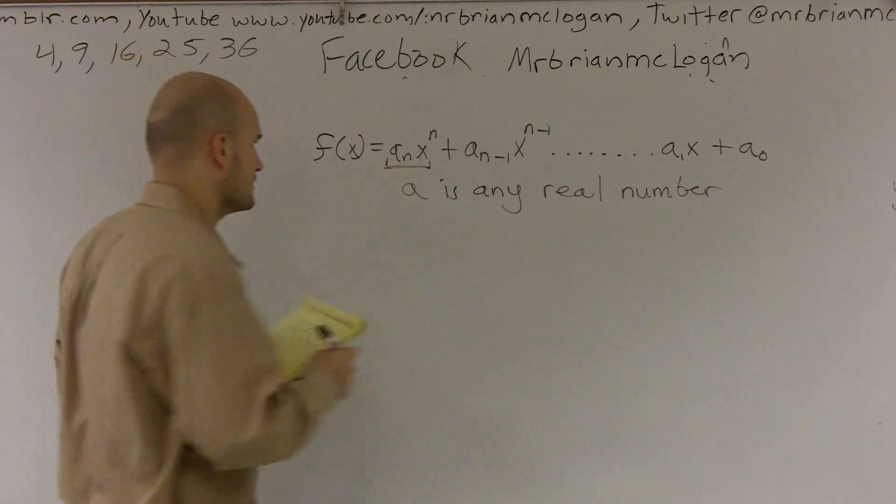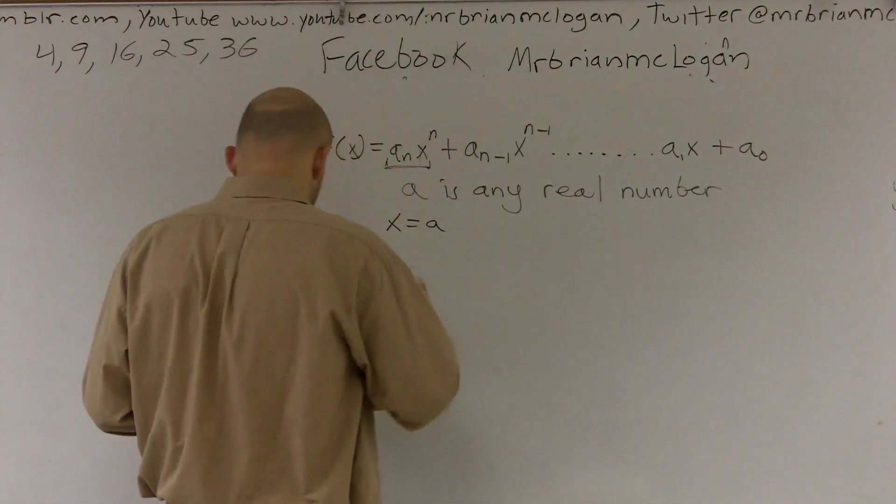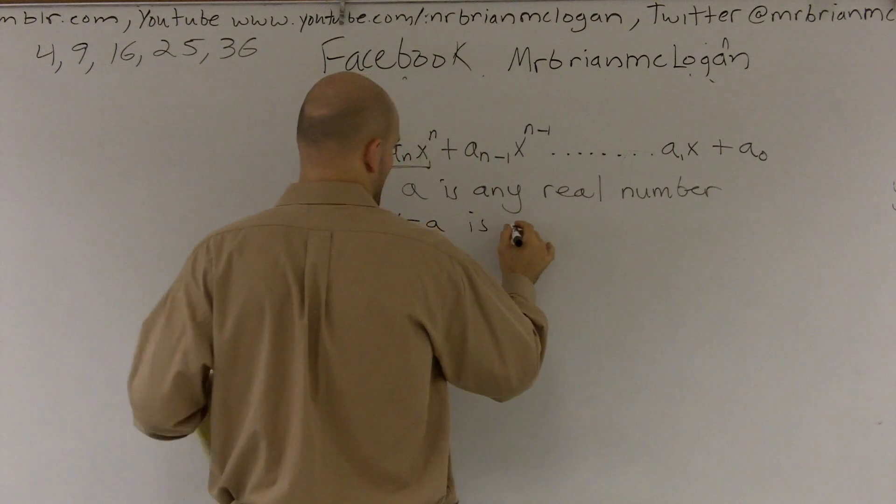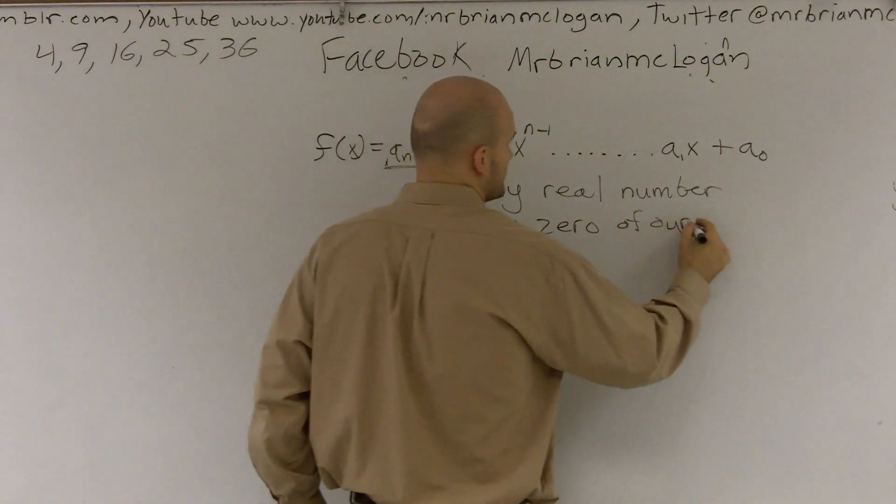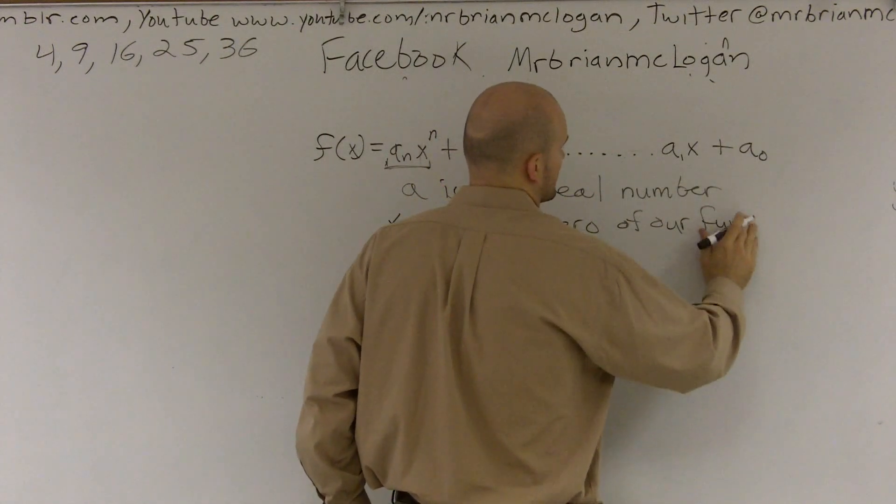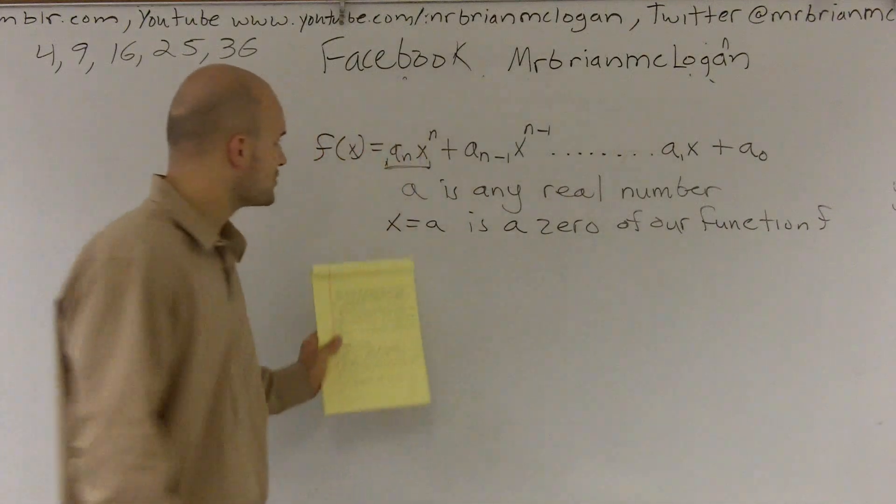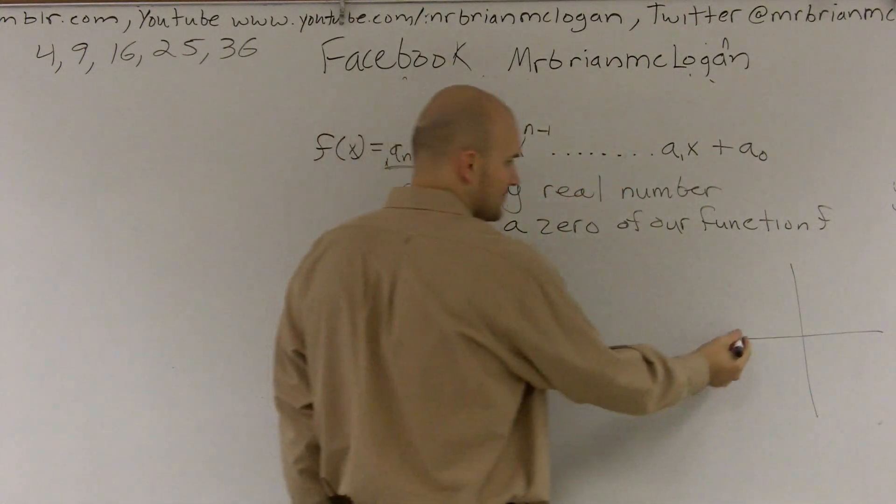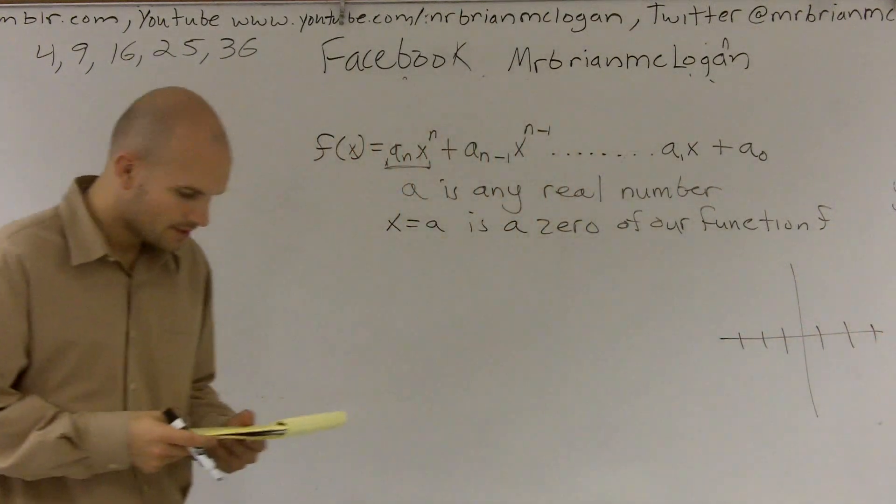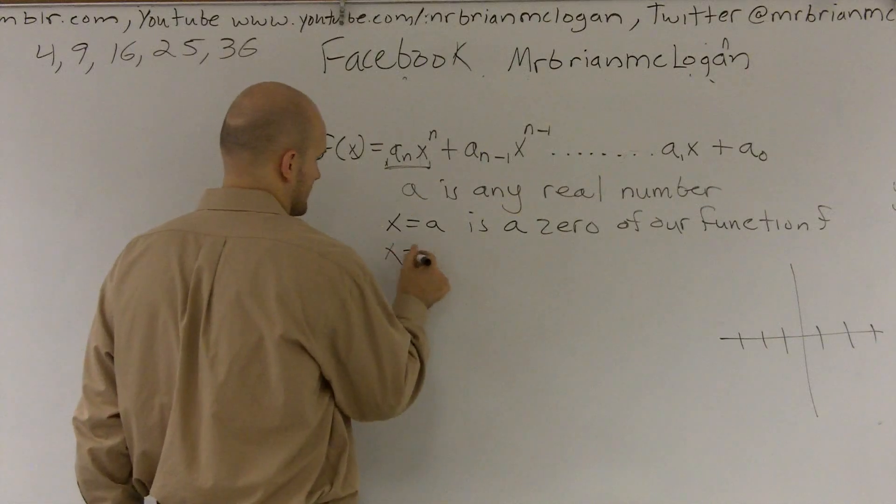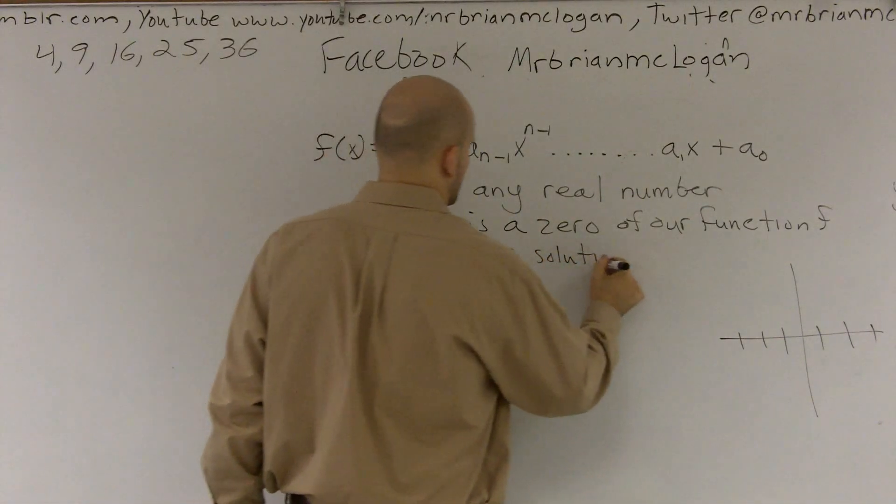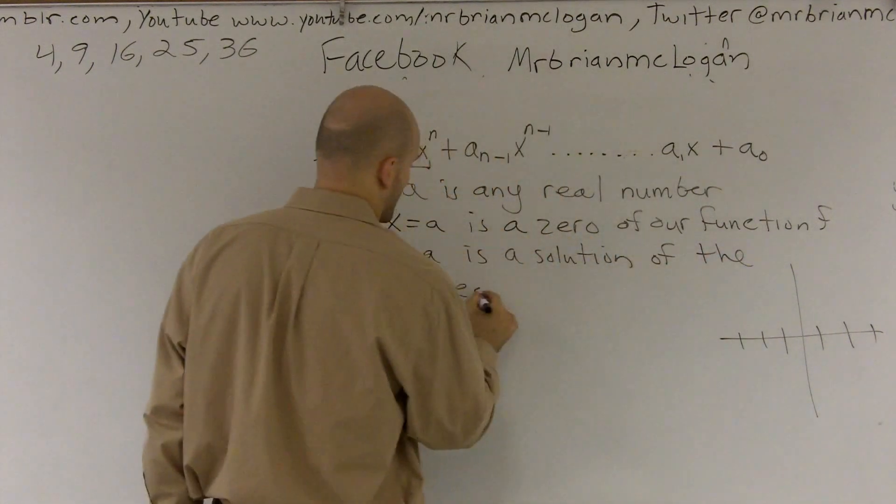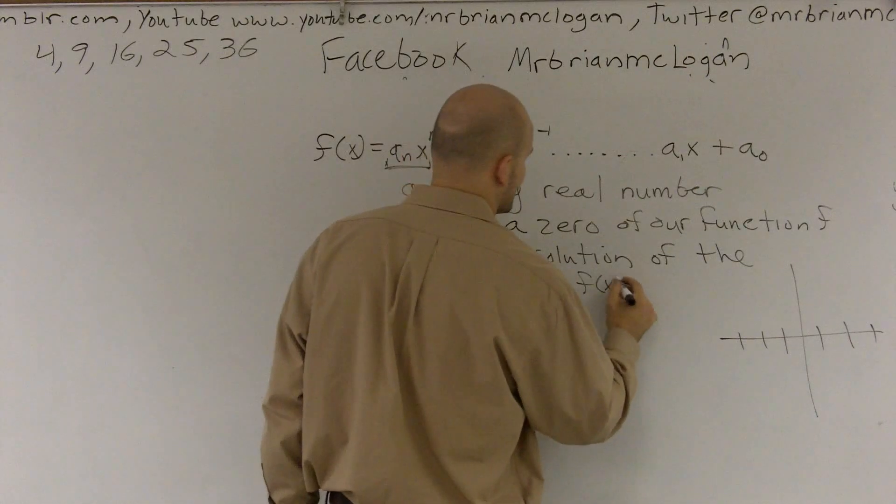So, if a is any real number, we can say that x equal to a is going to be a zero of our function f. So, we're saying x is equal to a. Well, remember, if you're looking at an x and y coordinate graph, remember x is going to tell you everything that's on your x axis.